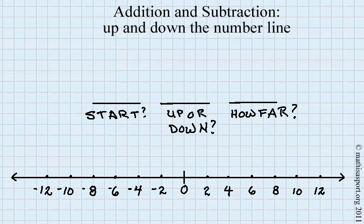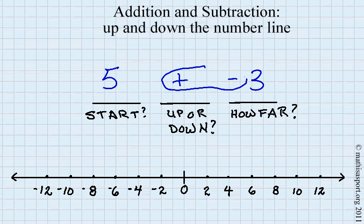Let's try 5 plus negative 3. This plus and minus are next to each other — what does that make overall? That makes a minus. So where do we start? At 5. Do we go up or down? We're going down. How far? Three: 1, 2, 3. Our answer is 2.